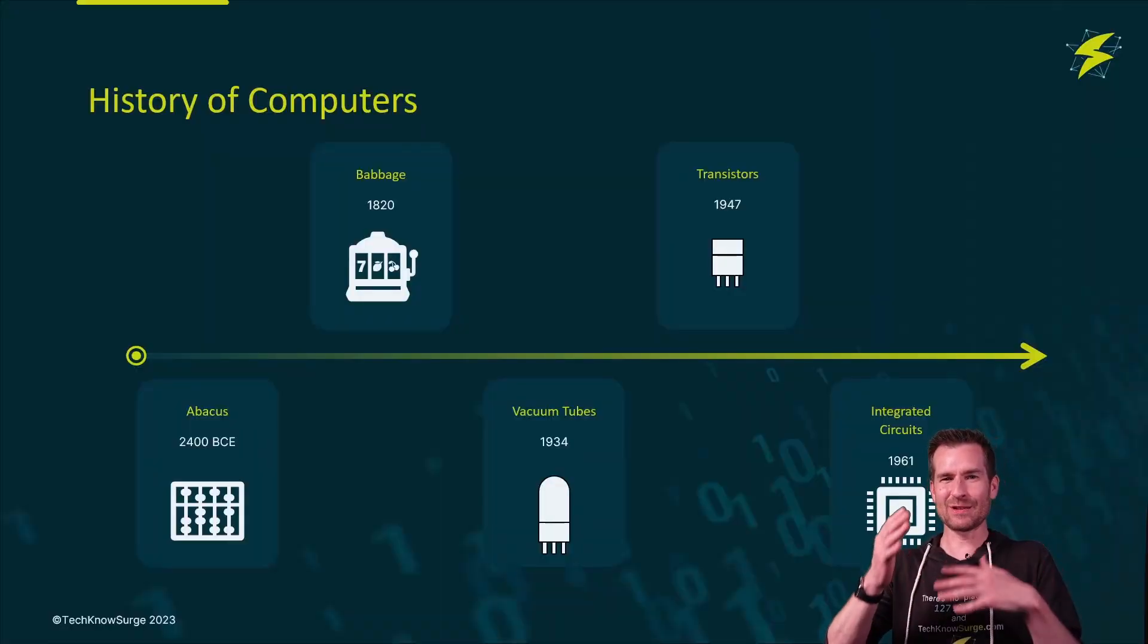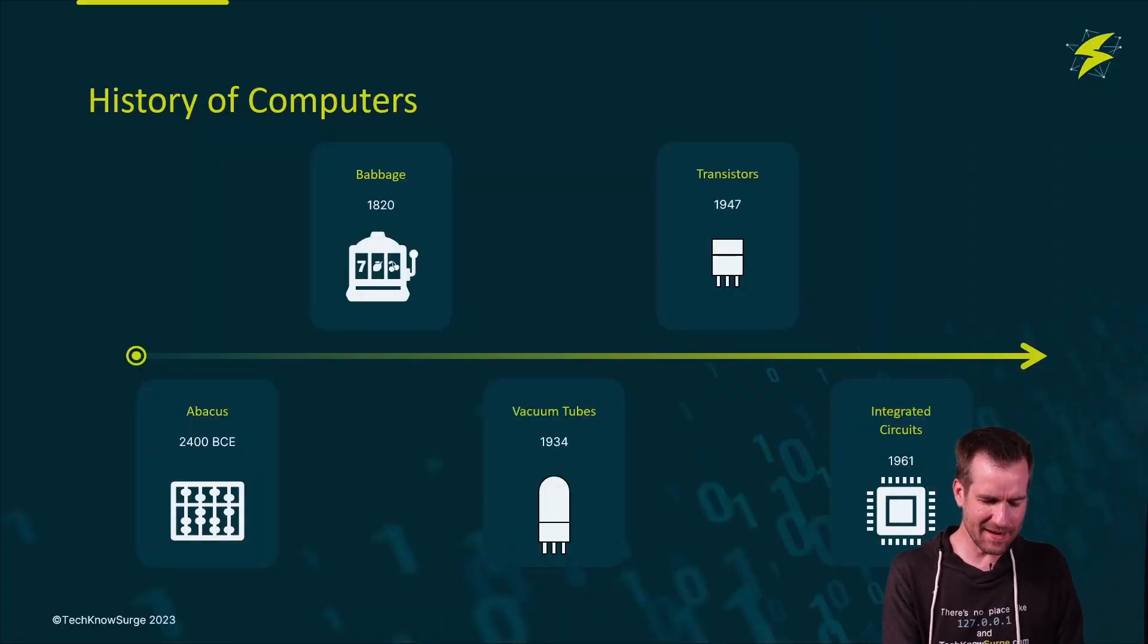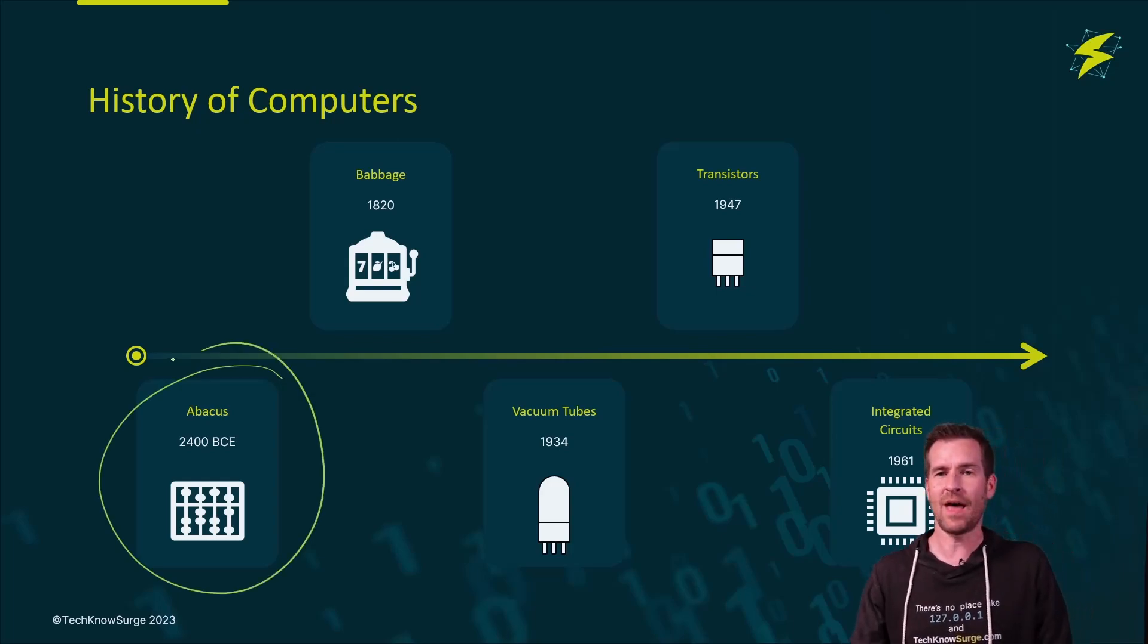So we're going to roll way back to 2400 BCE where we have the abacus. Now the abacus is contributed to being one of the first computers. It computed, although very manual. It was some sort of board with beads on it that you would scoot back and forth to calculate some sort of addition and subtraction, some simple calculation. So that was contributing as being one of the first computers. Obviously didn't have all the electronics that we have now and didn't have the speed. It was a very manual process.